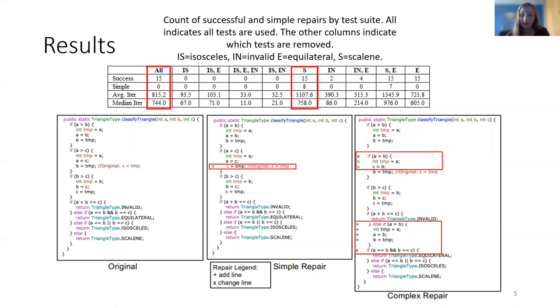But if we remove the scalene test cases, there are still 15 successful repairs, but 8 were simple, so we went from no simple repairs to over half being simple just by removing a set of test cases, with similar results when removing scalene and equilateral test cases.